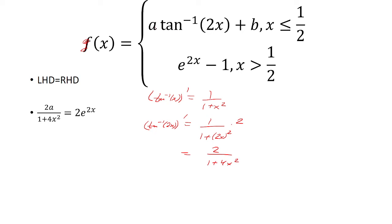And then since we have the a in front, just don't forget to multiply by a. The derivative of e to the 2x minus 1 is 2e to the 2x. Now this is differentiable at x equals one half. So let's plug in x equals one half.